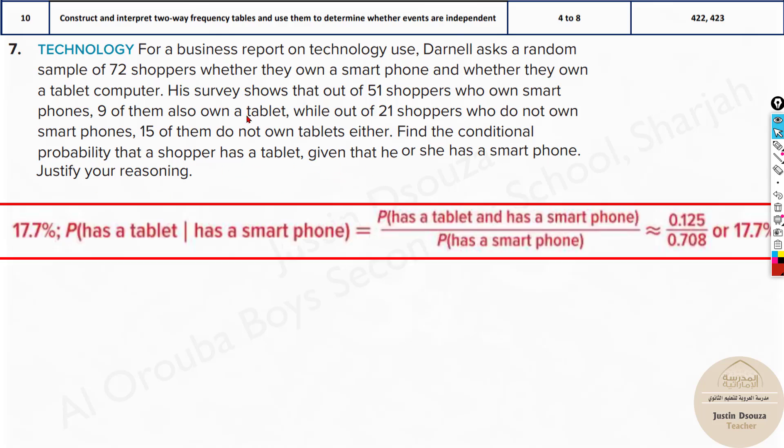This is a conditional probability. We have done similar problems already many times before. Here the condition is given: whatever is after 'given' is has a smartphone. So that must be the condition. What is the probability has a tablet given has a smartphone? So whatever is down must be down over here: probability of having a smartphone. They have told the total number of shoppers is 72.